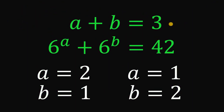So given these two equations — A plus B equals 3, and 6 raised to the power of A plus 6 raised to the power of B equals 42 — the values of A and B are: if A equals 2 then B equals 1, or if A equals 1 then B equals 2. And as always, we are done.